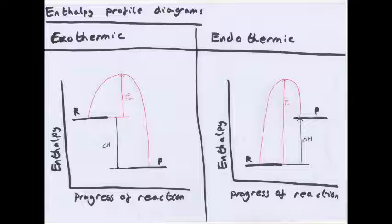For an endothermic profile diagram, the reactants start at a lower enthalpy level than the products because energy is taken in, so delta H goes up — it increases. Importantly, you still need to put in activation energy. The curve still goes higher than the products — if it doesn't go higher than the products, it doesn't work. The activation energy peak decreases back down, but decreases to a point that is higher than the reactants, so the products have more enthalpy than the reactants — delta H increases.